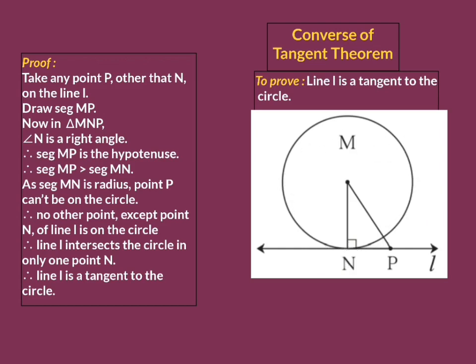There is one and only one common point between the circle and the line, and we know that common point is point N. To show line L as a tangent to this circle, we have to prove that no other point except point N of line L is on the circle — that is, point N is the one and only point of line L that lies on the circle.